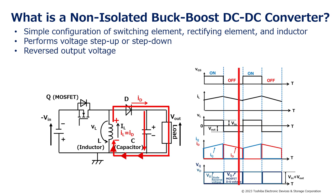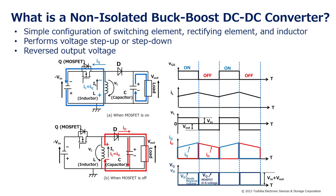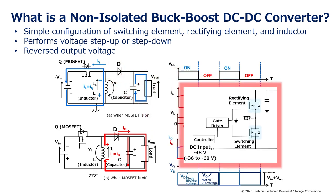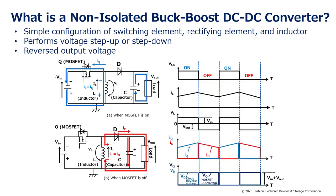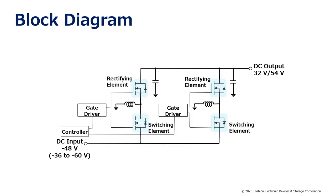The on-duty of the switching element is adjusted to control the output voltage. In the example shown, the diode is used as the rectifying element. However, in a power supply that outputs large current, a synchronous rectification method using a MOSFET is also used instead of the diode, in order to reduce the loss caused by the voltage drop when the diode is forward biased.